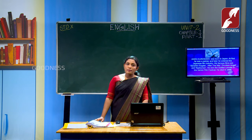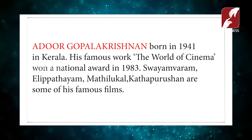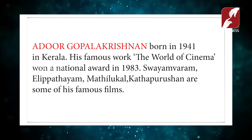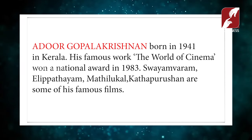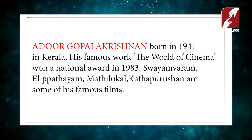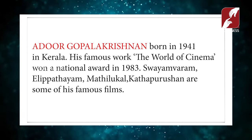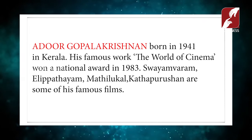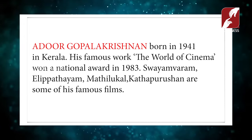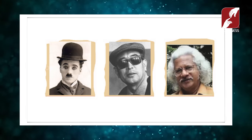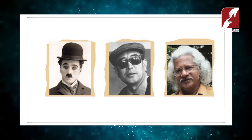And again we have one more personality — can you guess who this is? We are all familiar with this person because he hails from Kerala. His name is Adoor Gopalakrishnan, born in the year 1941 in Kerala. His famous work The World of Cinema won a national award in 1983. His notable films include Swayamvaram, Elippathayam, Mathilukal, and Kathapurushan. These are the profiles of these famous filmmakers. You have to collect information about them and write it down in your notebook.